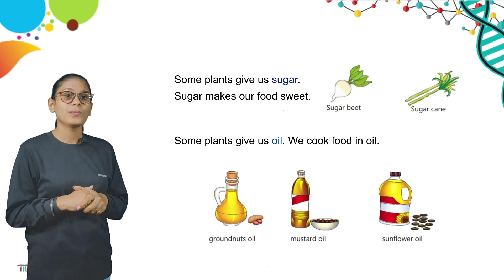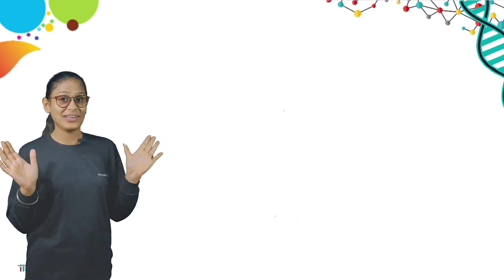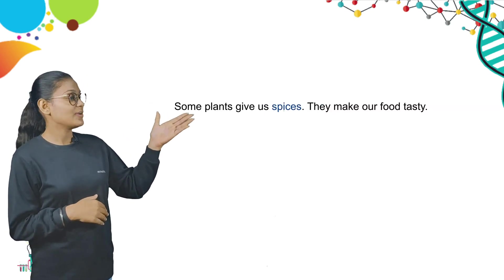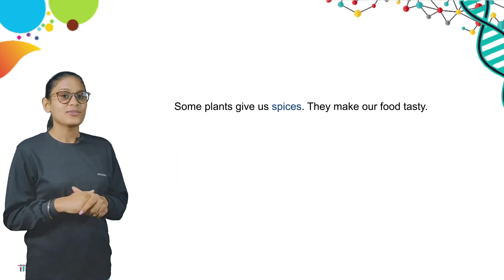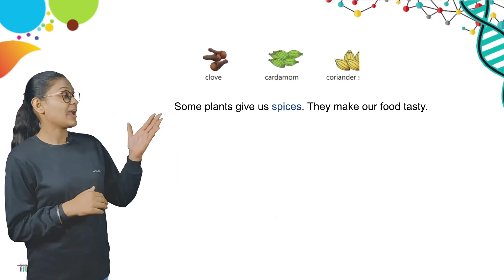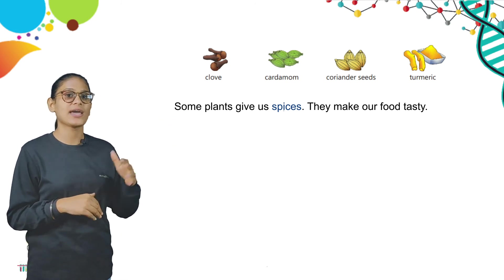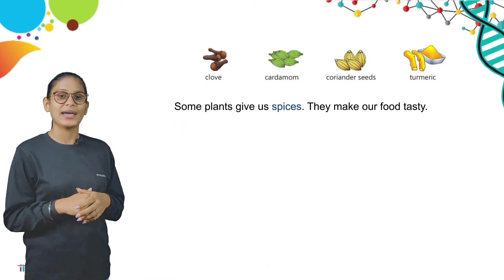Here are some examples of spices. Everyone likes spicy food! Some plants give us spices — they make our food tasty. Look at the pictures: the first one is clove, the second one is cardamom, then coriander seeds and turmeric.